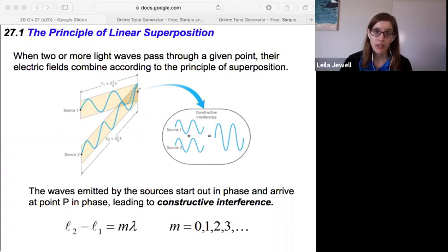27.1, the principle of linear superposition. That sounds familiar, that's the same title as 17.1, because it's the same idea. We're just now focused on light waves as opposed to sound waves. When two or more light waves pass through a given point, their electric fields combine according to the principle of superposition, which just says that whatever the waves are at any given instant of source one, source two, they add together to form something either bigger, smaller, or somewhere in between.